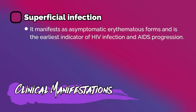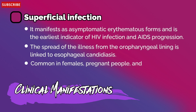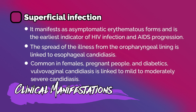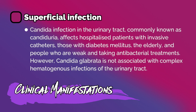It manifests as erythematous forms and is the earliest indicator of HIV infection and AIDS progression. The spread of illness from the oropharyngeal lining is linked to esophageal candidiasis. Vulvovaginal candidiasis is linked to mild to moderately severe candidiasis in common females, pregnant females, and diabetics. Candidiasis of the urinary tract, commonly known as candiduria, affects hospitalized patients with invasive catheters, those with diabetes mellitus, the elderly, and those taking antibacterial treatments.